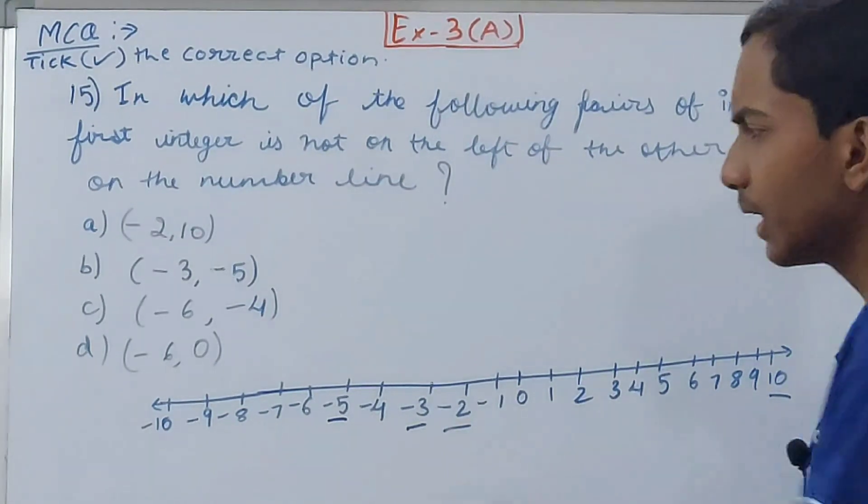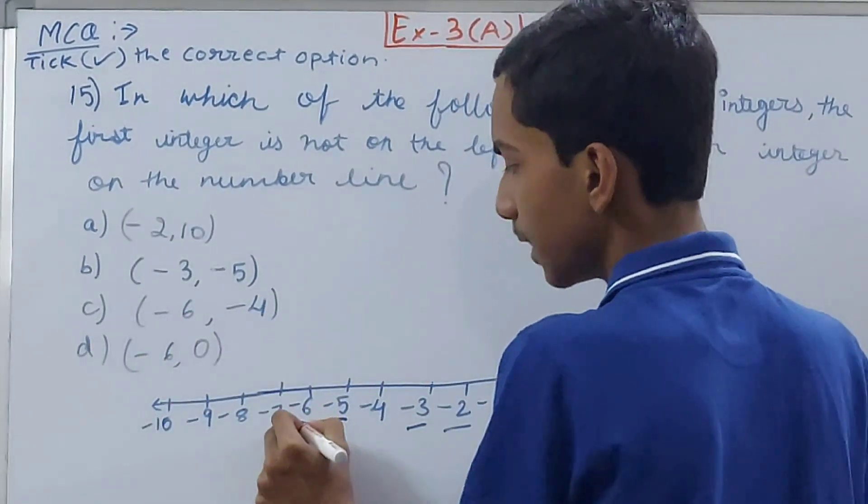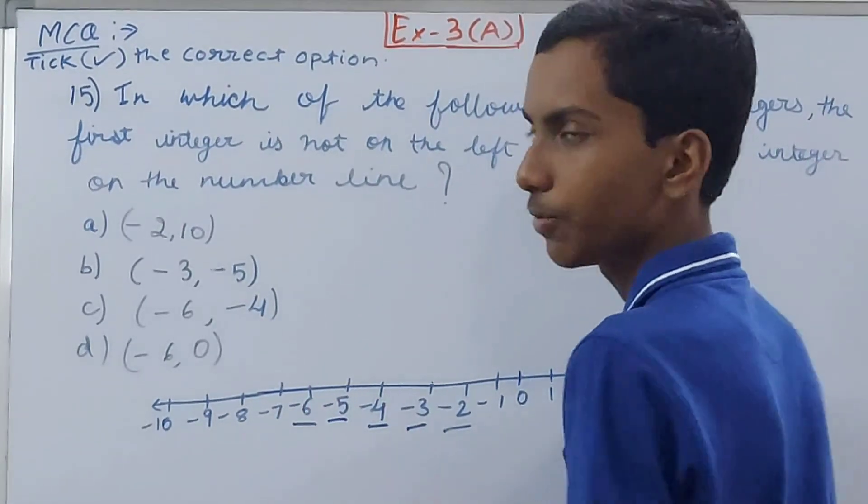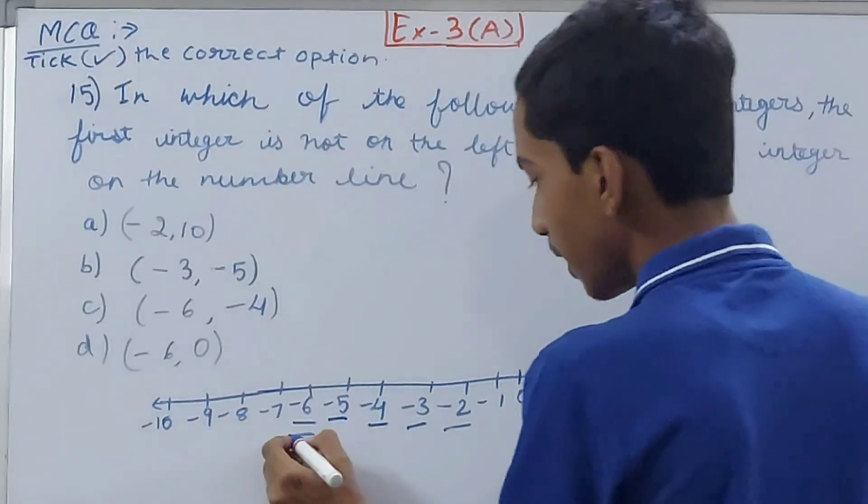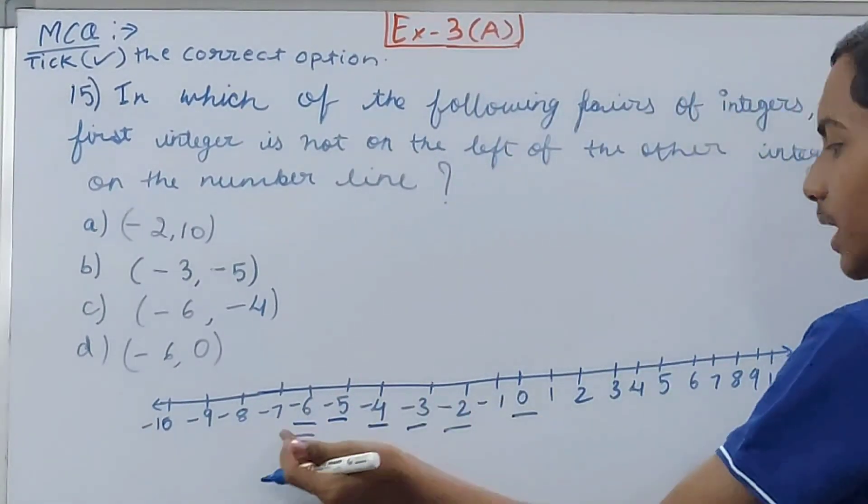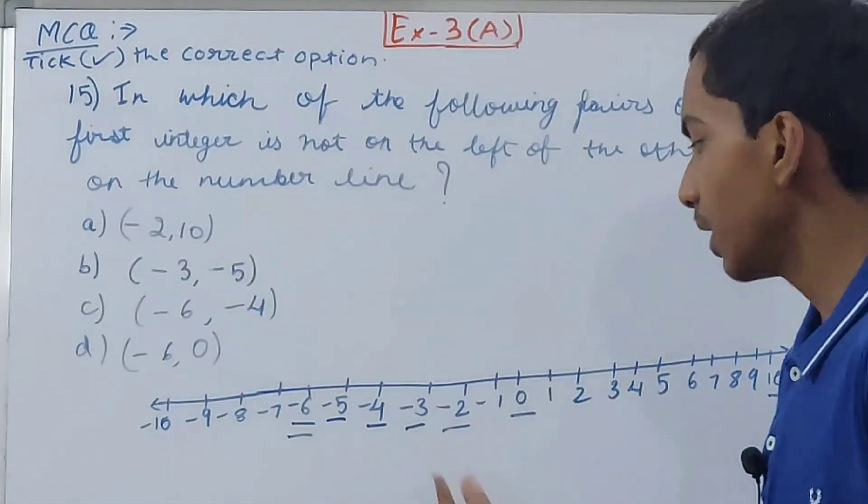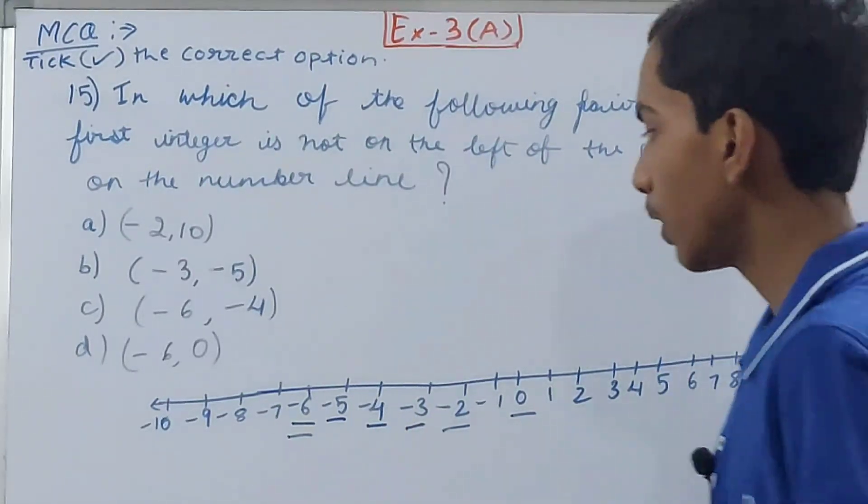Right, but let's look at the other two options just to see more. -6, -4. This is -6, this is -4. -6 is to the left of -4, so this is also incorrect. -6 and 0. Again, -6 and 0. Again, -6 is to the left of 0. Only and only in the second one, -3 is to the right of -5, or basically not on the left, we can say. So this is the correct option.